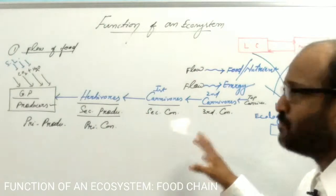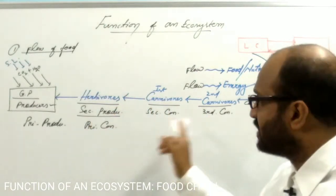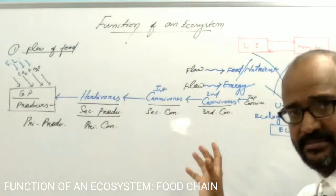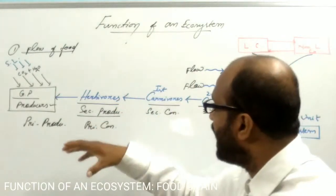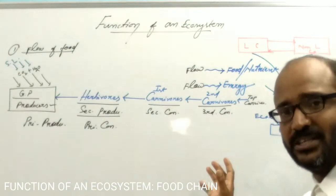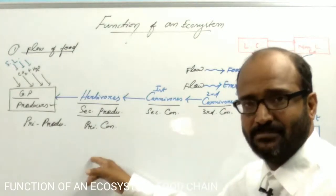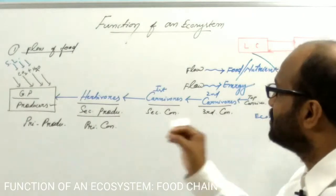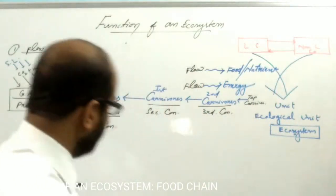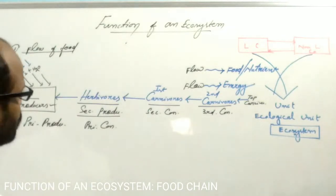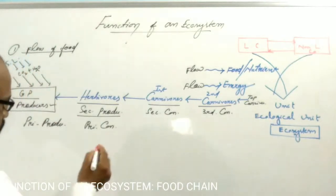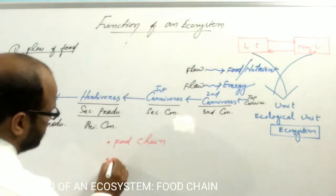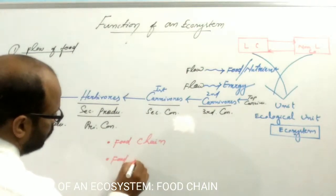There is a relationship because of food — a sequence of relationship because of eating and being eaten by others. This relationship in the ecosystem is known as the food chain. The flow of food can be studied under two heads: one is the food chain, and another is the food web.